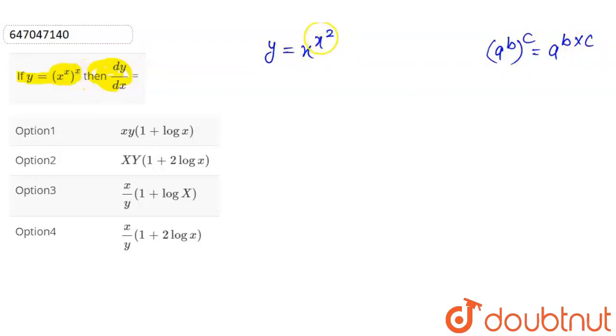So this will be variable to variable power. If we have a differentiation, then we will take logarithm. LHS is log y, RHS will be log of x to the x square.